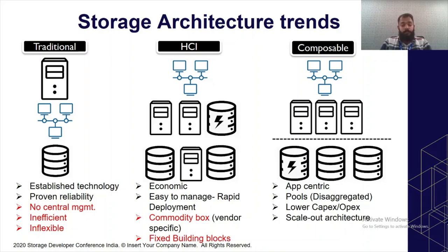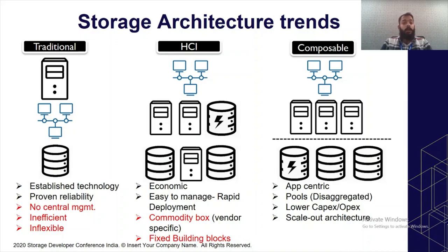The same issue applied to compute. It was not very flexible to scale or provision storage to other required machines, because storage was directly provisioned to a server. Because of the economic model, we had to come up with something better, and that's where HCI — hyper-converged infrastructure — played a role. It was easy to manage and could deploy rapidly.